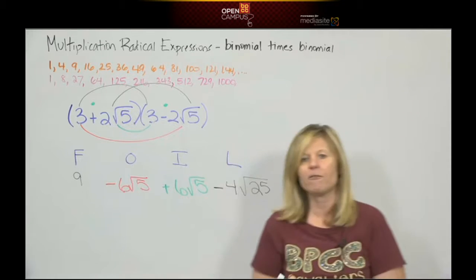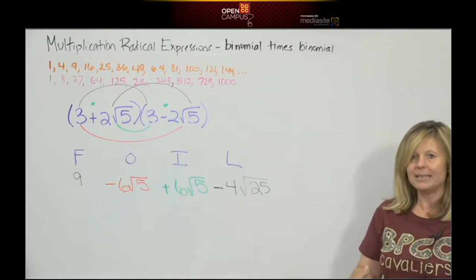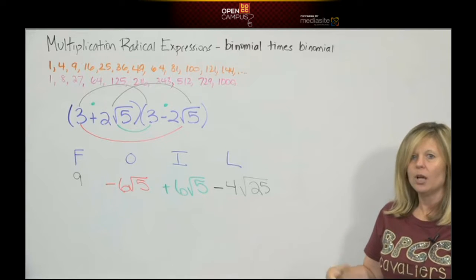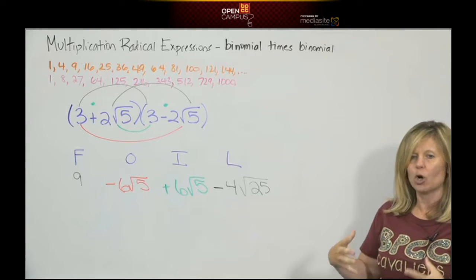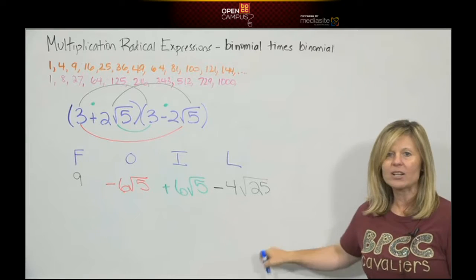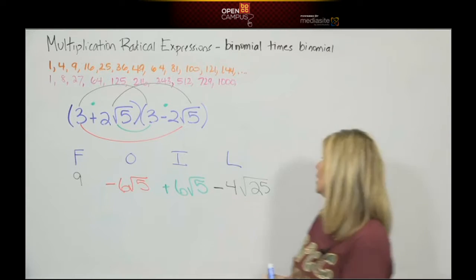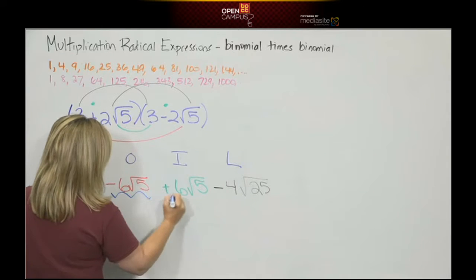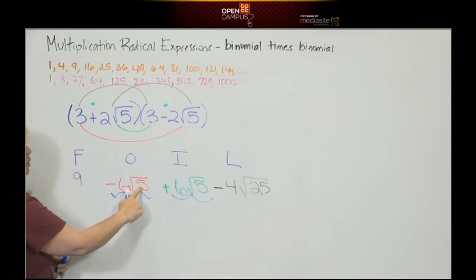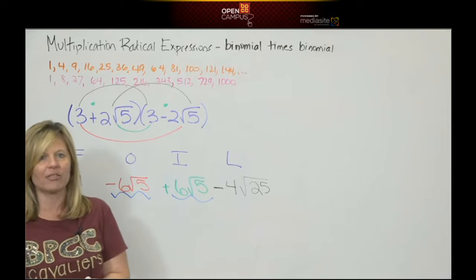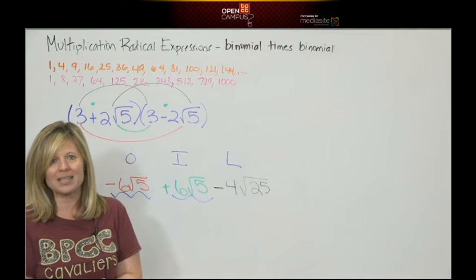So there are four terms with doing FOIL. But now, we have to continue. Usually when we do FOIL, we have terms that are alike. What makes a radical alike? The radicand. It has to be exactly alike. Sure enough, we have two radicands that are alike. Square root of 5 and square root of 5 are identical. What happens if you have a negative 6 and a positive 6 and put that together? Well, you would subtract and make 0.